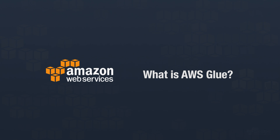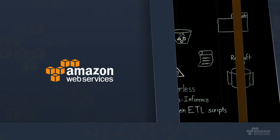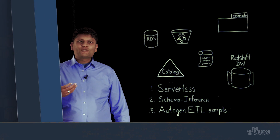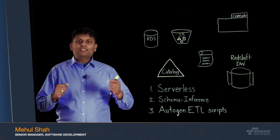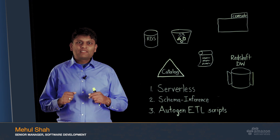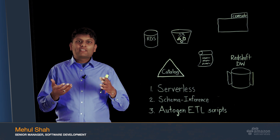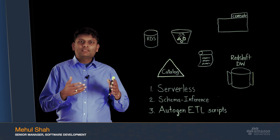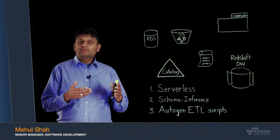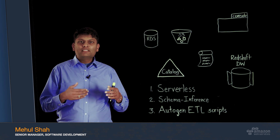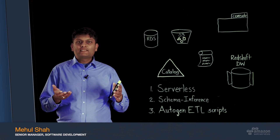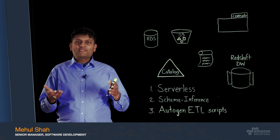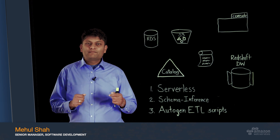AWS Glue is a cloud-optimized extract, transform, and load service — ETL for short. It allows you to organize, locate, move, and transform all your datasets across your business so you can put them to use.